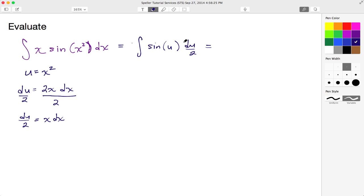This du over 2 is really, it's understood I have a coefficient of 1 in the front here, so this is really 1 half times du. And we know from the properties of integration that I can pull any constant out to the front. So this here is really 1 half times the integration of sine u du.